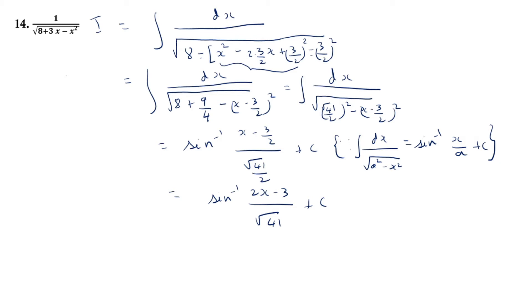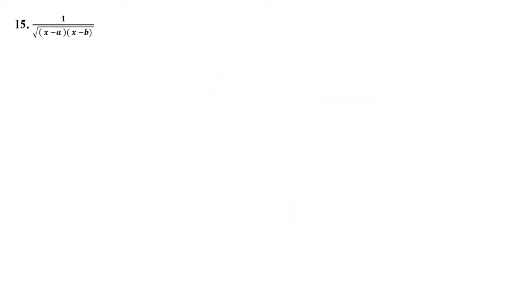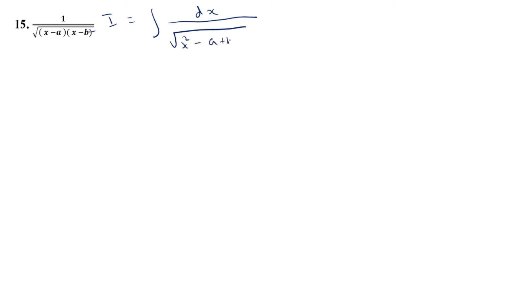I hope this is clear. The next question is the integral of 1 divided by the square root of (x minus a)(x minus b). So let me write I as the integral of dx divided by the square root of x squared minus (a plus b)x plus ab. We have to complete the square inside the root.